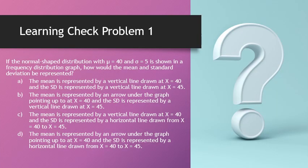Learning check problem one: In a normal distribution with a mean of 40 and standard deviation of 5, how would the mean and standard deviation be represented? The mean would be represented by a vertical line at x equals 40, and the standard deviation would be represented by a horizontal line extending to x equals 45 — that's 5 points above the mean.